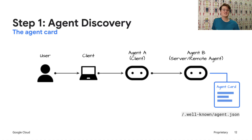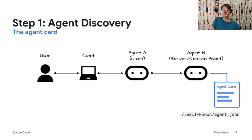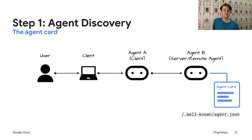This card tells Agent A everything it needs to know to start a conversation. This includes Agent B's name, what it does, its HTTP endpoint URL for A2A communication, the specific skills it offers, any special capabilities like streaming, and how to authenticate. You can think of this functioning like robots.txt for web crawlers, or service registries in microservice architectures.